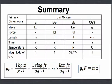In summary, this table shows the primary dimensions for each unit system. For the SI system, the primary unit for mass is kilogram, force is not a primary unit, length is meter, time is second, and temperature is kelvin. The magnitude of GC for this system is 1.